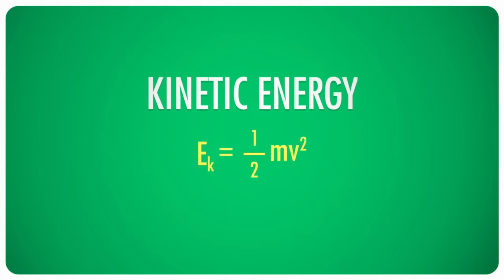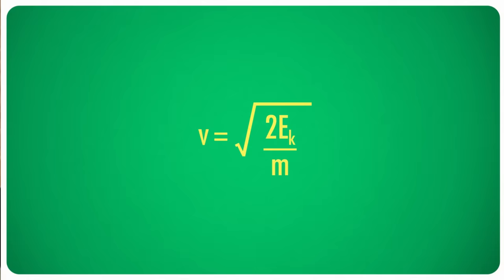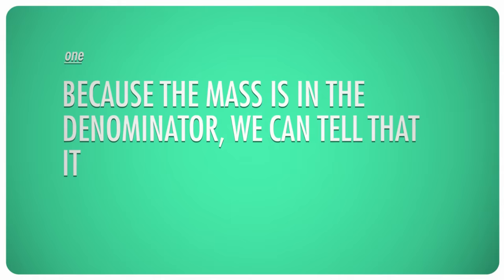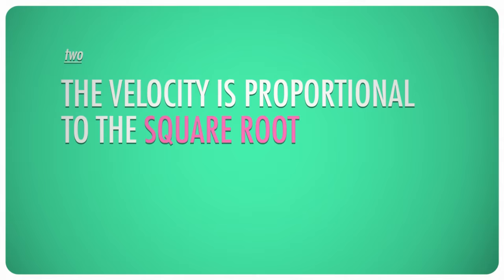Kinetic energy also describes the relationship between a particle's velocity and its mass, so a good understanding of kinetic energy will help a lot as we study the motion of gases. The formula for kinetic energy is one-half mv squared. Any changes in the kinetic energy are directly linked to changes in velocity. If we rearrange the formula, we find that the velocity of a body equals the square root of two times the kinetic energy divided by its mass. This highlights two important points: one, because the mass is in the denominator, it is inversely proportional to the velocity, meaning bigger masses move more slowly than smaller masses with the same kinetic energy. And two, the velocity is proportional to the square root of the mass, meaning a fairly large change in mass is required to make a significant change in velocity.